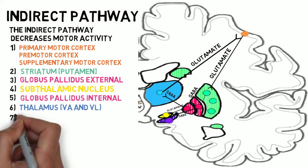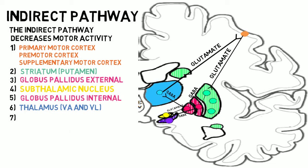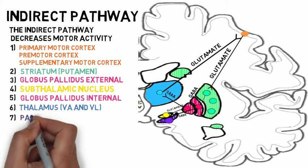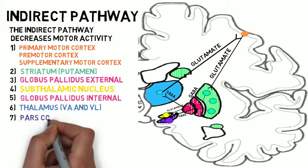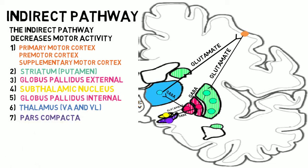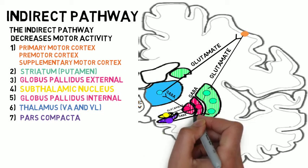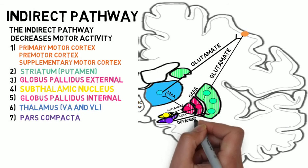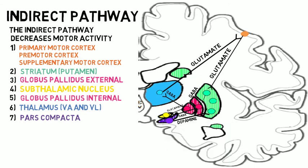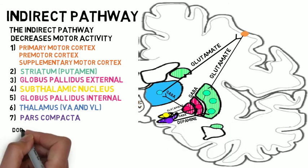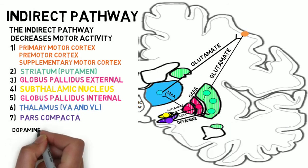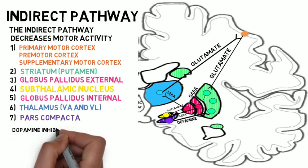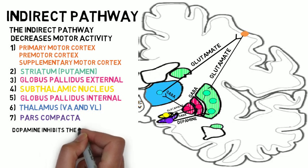Recall that the substantia nigra pars compacta contains dopaminergic neurons that project to the striatum. Striatal cells involved in the indirect pathway express D2 receptors, which are inhibited by dopamine. Therefore, dopamine inhibits the indirect pathway and favors motor movement.